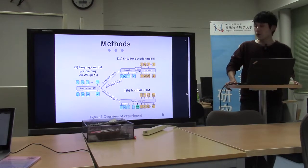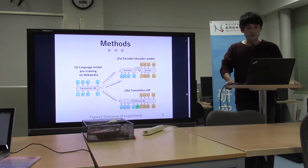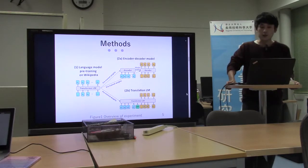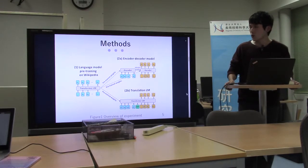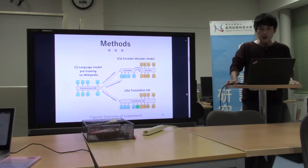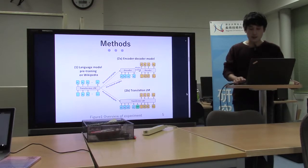This is an overview of the experiment. The experiment consists of two parts. First, language model pre-training on Japanese Wikipedia. After that, the pre-trained weights are incorporated into the two models. I will give more details in the next slide.